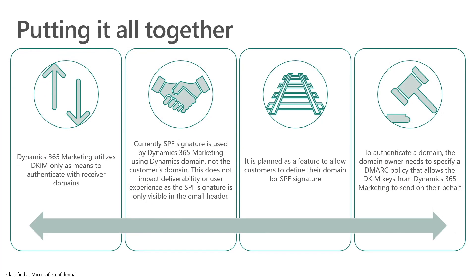So how do we put all of those concepts together? Dynamics Marketing uses DKIM as a means to authenticate with receiver domains. The SPF signature is from the Dynamics domain, not a customer's domain. This does not impact deliverability as the SPF signature identifying our servers is only visible in the email header. We do plan to allow a future feature to let you file your own domains for SPF signatures as well.